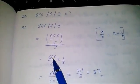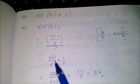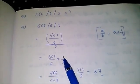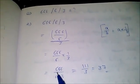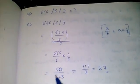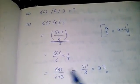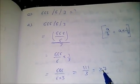So 666 divided by 6 into 1 by 3. Now this can be written as 666 divided by 6 into 3. By solving this we will get the value, that is 37.